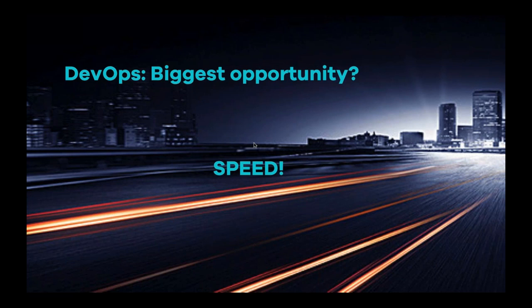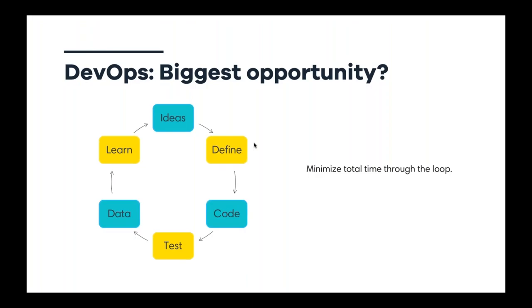It's the speed of learning. When we do continuous deployment with multiple releases a day, we have the opportunity to get feedback from users or from a small feature increment very quickly. That's the biggest value we see as product people or entrepreneurs when using this DevOps approach.